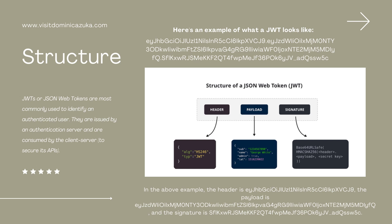Each JWT token is generated as an alphanumeric string separated by three periods. In the above example, the first string before the first period is the header, which, as displayed in the image, involves the type setting, the algorithm, and also the type path. The alphanumeric string before the second period is the payload.